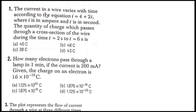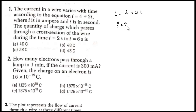The first question: current in a wire varies with time according to the equation i = 4 + 2t, where i is in amperes and t is in seconds. We need to find the quantity of charge which passes through a cross section of the wire during the time t = 2 seconds to t = 6 seconds.